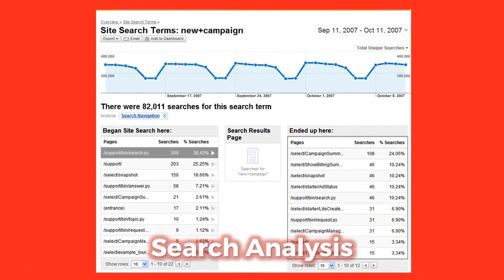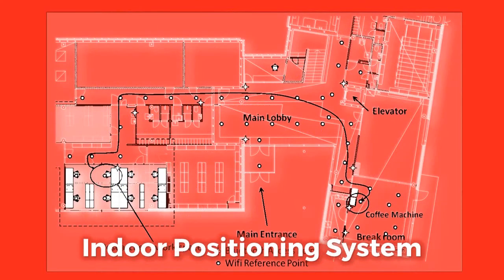Search Analytics is the analysis and aggregation of search engine statistics for use in SEO. It helps website owners understand and improve their performance on search engines. An Indoor Positioning System is a solution to locate objects or people inside a building using radio waves, magnetic fields, acoustic signals, or other sensory information collected by a mobile phone.